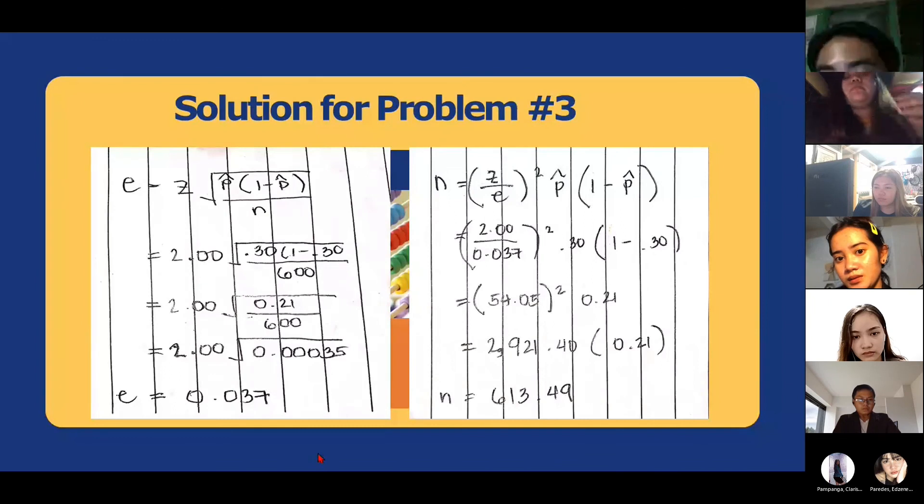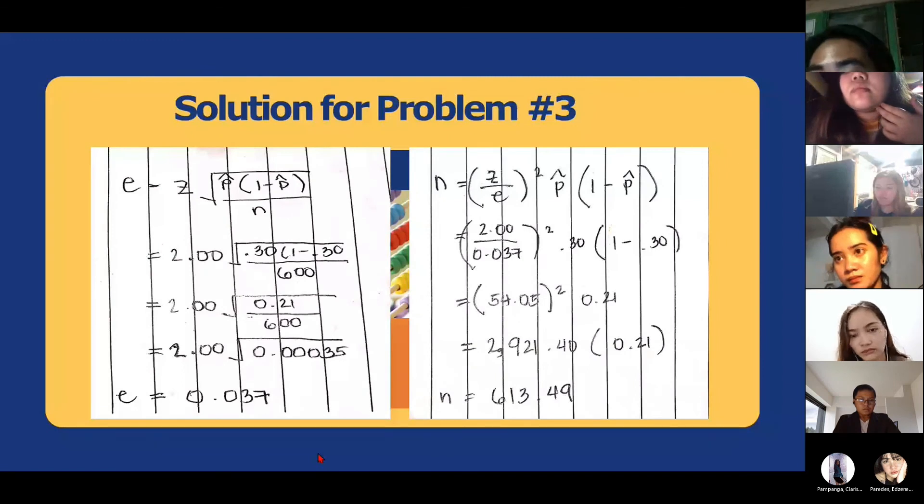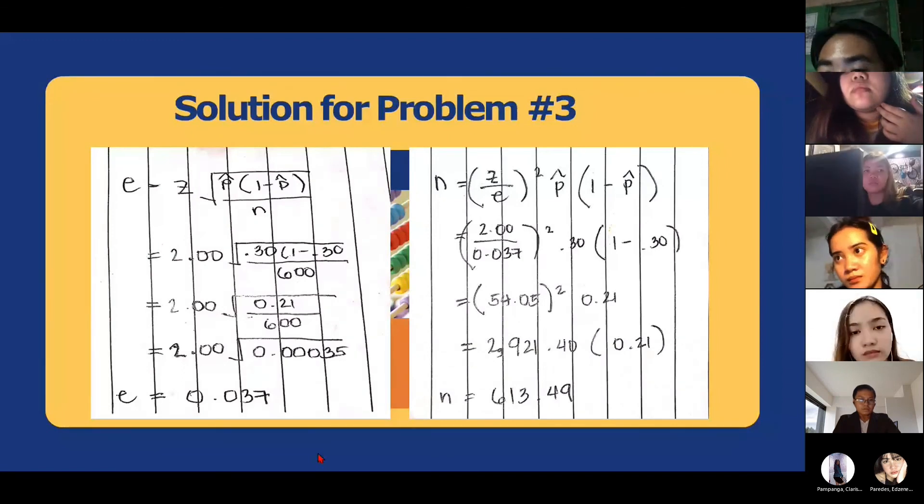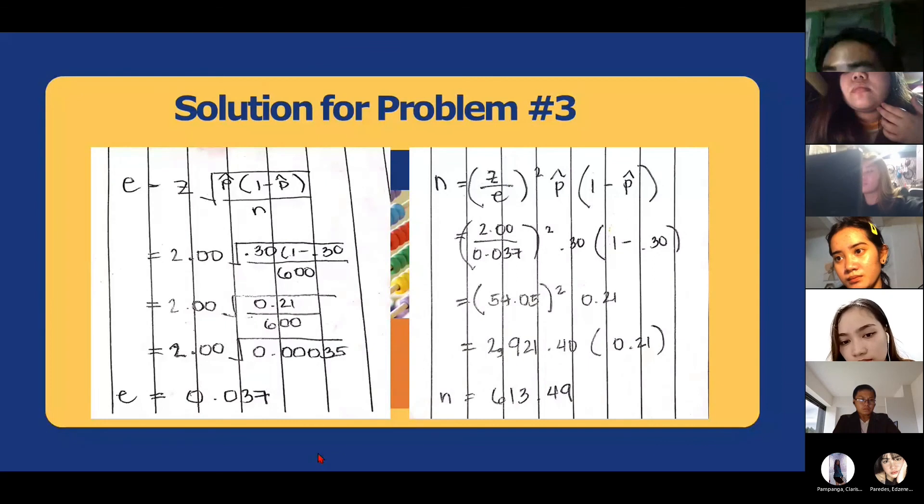We get 0.21 over 600. And the result is 2.00 is the square root of 0.0035. And the maximum error percentage is equal to 0.037.